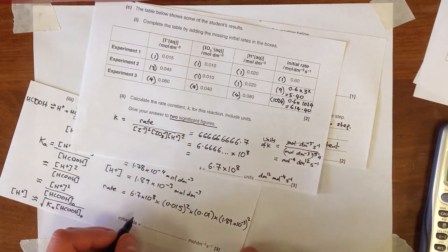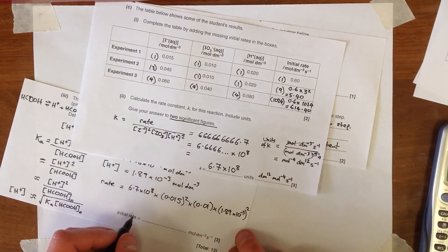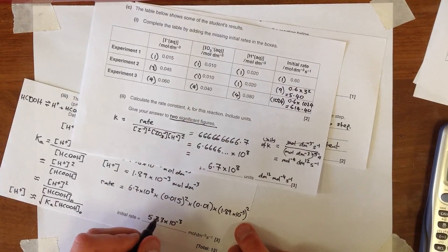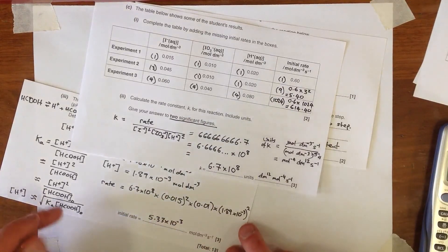And so when we work that through, we find out that our initial rate should be 5.33 times 10 to the minus 3 moles per decimetre cubed per second.